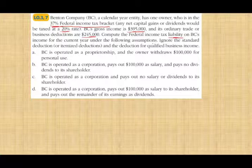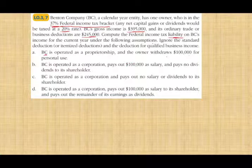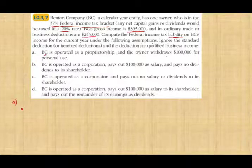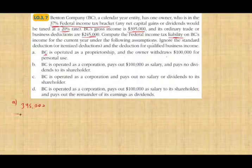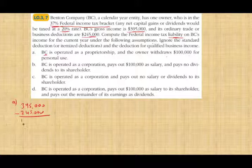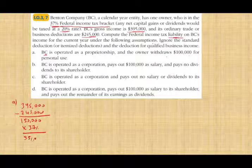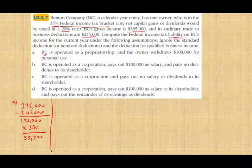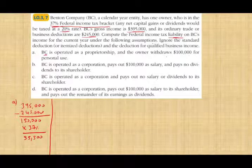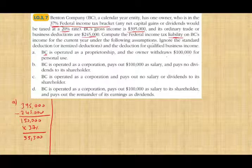Scenario A: BC is operated as a sole proprietorship and the owner withdrew $100,000 for personal use. The business made $395,000 minus operating expenses of $245,000, giving us $150,000 of net income. We pay 37% on that — the personal tax rate — so the individual will pay $55,500. Note that the $100,000 owner withdrawal does not matter; it is not deductible for tax purposes.